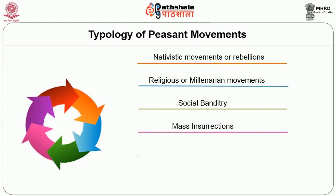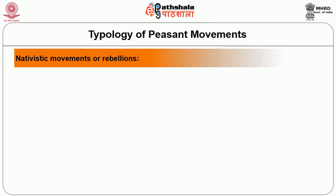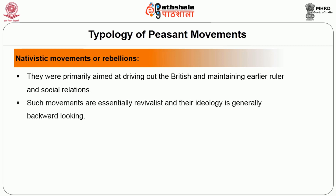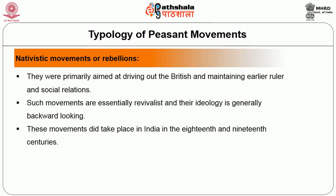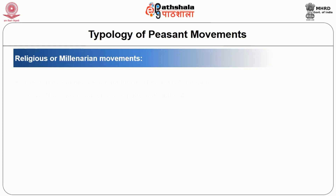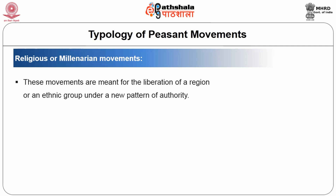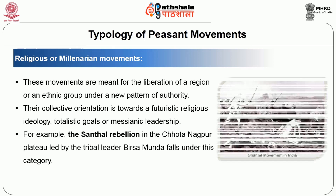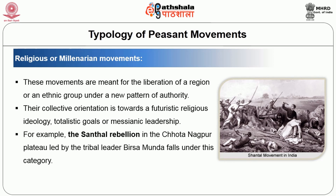Privileging goals, ideology and methods of organization in classification of peasant movements, the following types emerge. First, nativistic movements or rebellions, which were primarily aimed at driving out the British and maintaining earlier rulers and social relations. Such movements are essentially revivalist in their ideology and generally backward looking. These movements took place in India in the 18th and 19th centuries. The process of British annexation of Indian territory and the imposition of alien land revenue administration in different parts of the country saw the emergence of such movements. Second, religious or millenarian movements, which are meant for the liberation of a particular region or ethnic group under a new pattern of authority. The collective orientation is towards futuristic visions, religious ideology, totalistic goals, or messianic leadership. For example, the Santal Rebellion in the Chhota Nagpur plateau led by tribal leaders falls under this category.